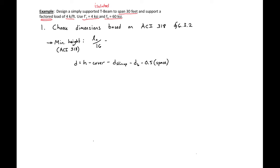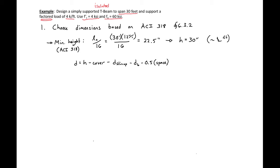First we'll use our minimum height requirements to find the height of our section. Our height needs to be greater than or equal to ln over 16. So we have a 30 foot span times 12 inches per foot divided by 16, which gives us a minimum height of 22.5 inches. I'm going to start well above this and use a height of 30 inches, using our rule of thumb where our height in inches is about equal to our length in feet.